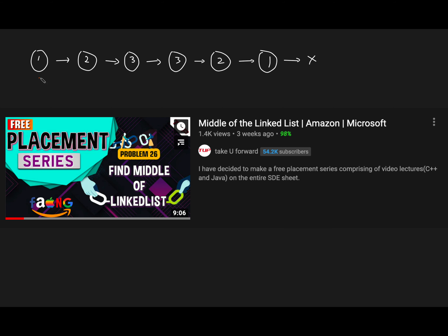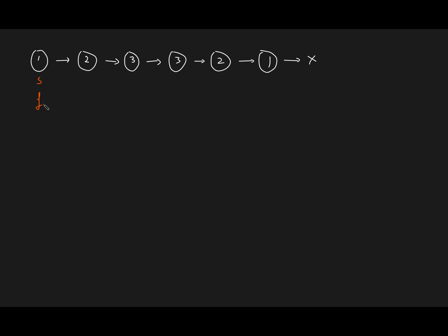What you do is take a slow pointer and a fast pointer. Point both to the first node, then move the slow pointer by one step and the fast pointer by two steps. Keep doing this — the moment you reach the second last node or the last node, you stop. If this is an even-length linked list, the left node will be your middle node. So we know that node three is the middle node, and our slow pointer is standing at the first middle of the even-length linked list.